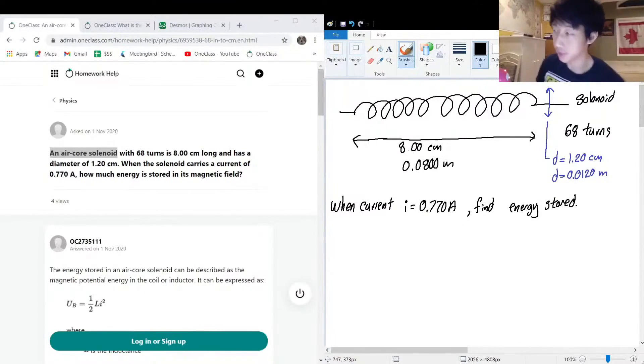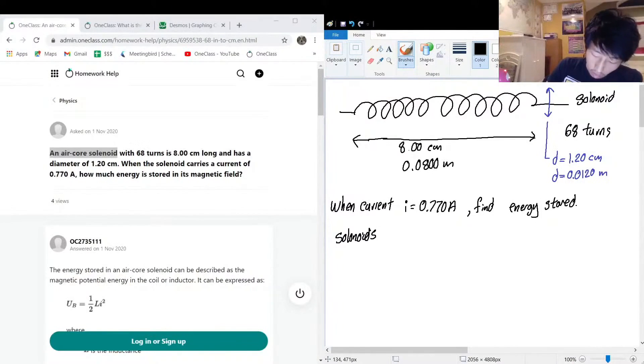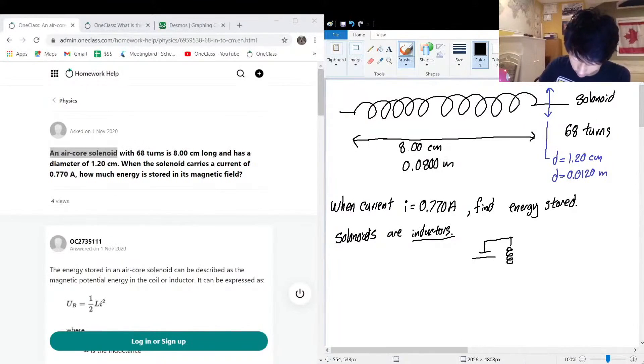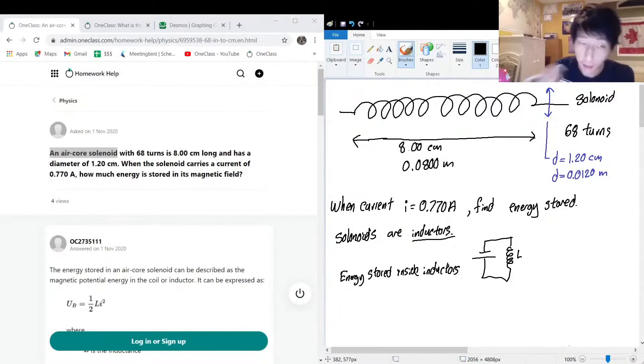So one thing that I want to mention is that this solenoid, solenoids are inductors. Inductors on your electric circuit diagrams look exactly like this, like if you had an electric circuit like this, no one would doubt that this is an inductor, which is represented with L. So the potential energy, or the energy stored, energy stored inside inductors, is modeled with the following equation.